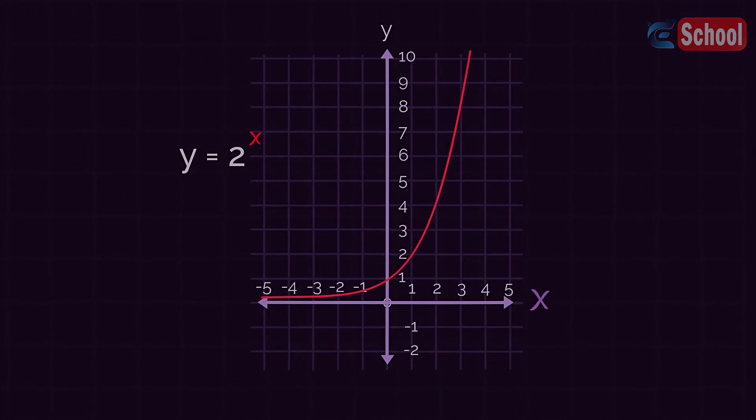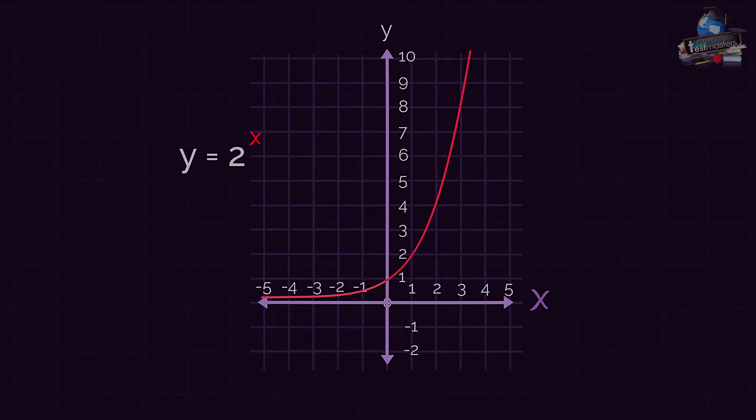For any number that is above 1, the exponential graph will also look similar in shape to this. For the negative values of x on the graph, the graph is very close to y equals 0, and then as the x values increase the graph heads towards infinity.